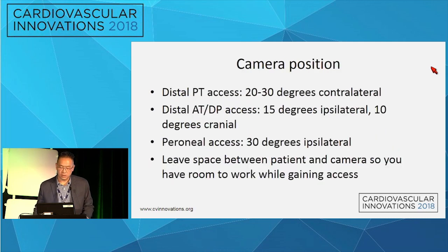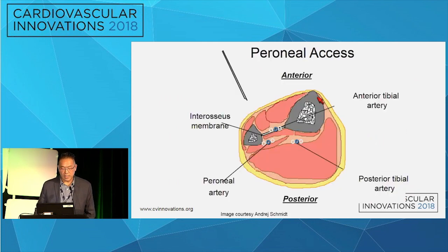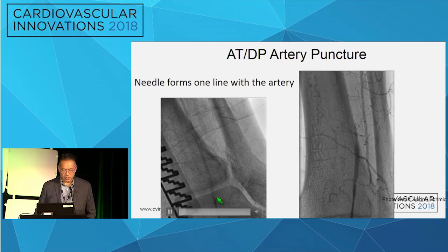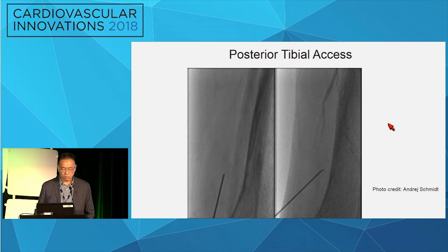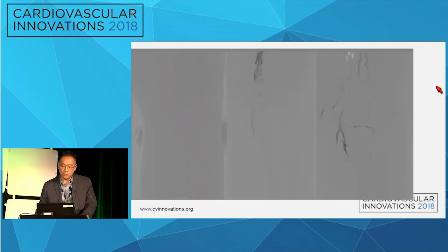For fluoroscopic guidance — because sometimes you don't have an ultrasound tech or the skill set — the camera position is very similar to where your ultrasound beam would be. Here's an example of anterior tibial access, here's posterior tibial access, here's peroneal access. For peroneal access anterolaterally, you put your camera about 23 degrees ipsilateral, come down to separate the tibia and fibula, inject contrast, and come through the interosseous membrane into the peroneal artery. In this live example, you keep your needle parallel, inject contrast, push it down into the vessel. If you don't see blood, you can move the camera orthogonal, and in that view you can see if you've gone past it, come back, and pass your wire. There is also a needle extension holder that helps reduce radiation exposure.